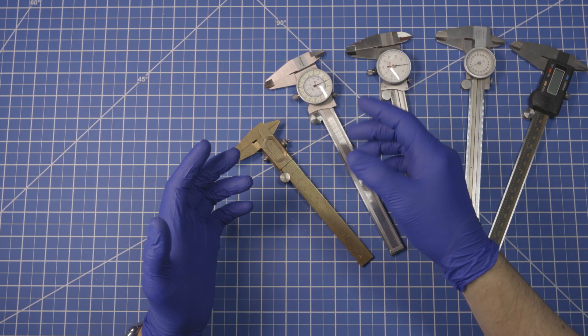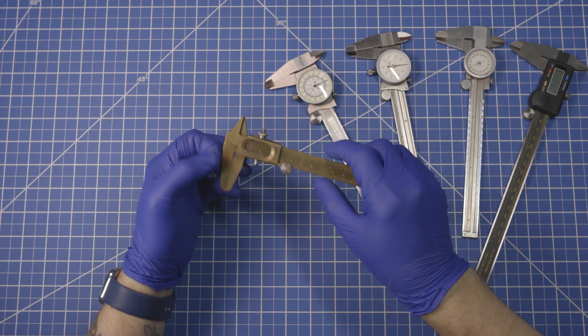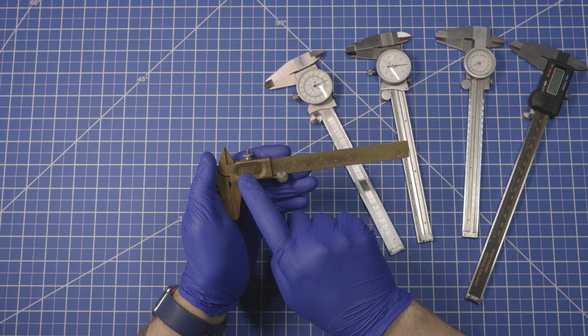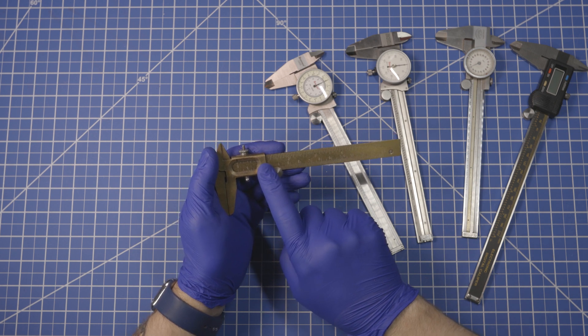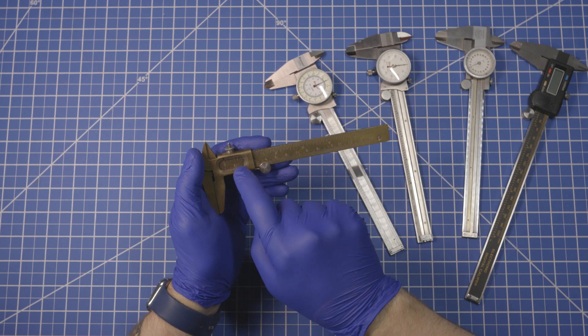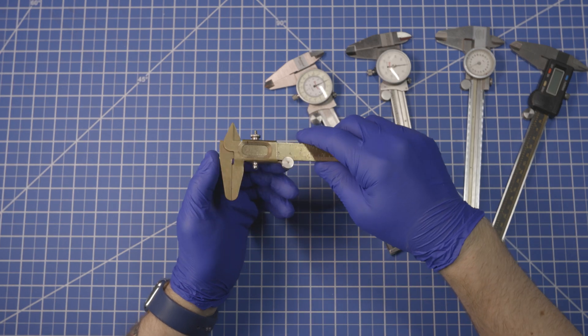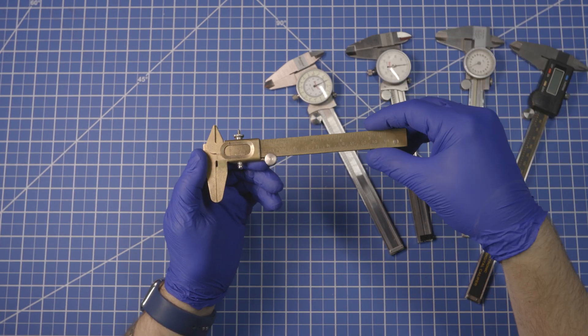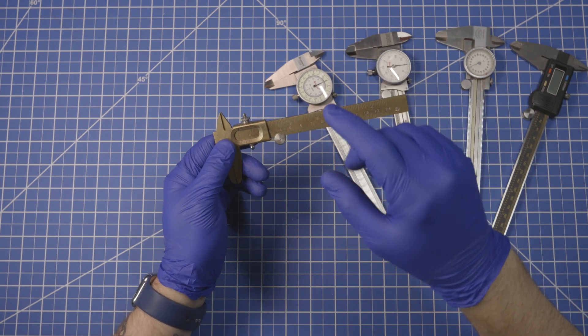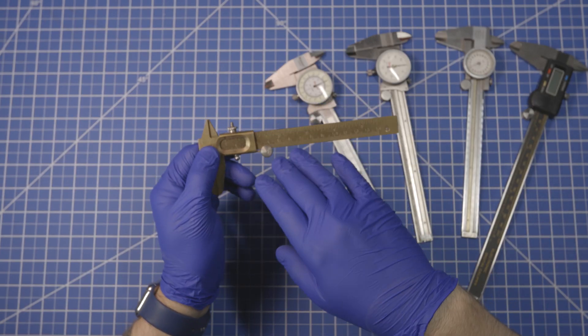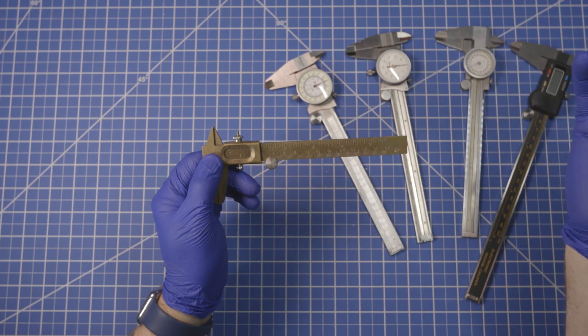The only veneer calipers, so-called because they use this static versus dynamic scale with an interpolated scale, which was invented by Mr. Pierre Vernier back in the day, is the only real veneer calipers. And I realize the guy's name is Vernier. We call them veneer calipers. English is weird.